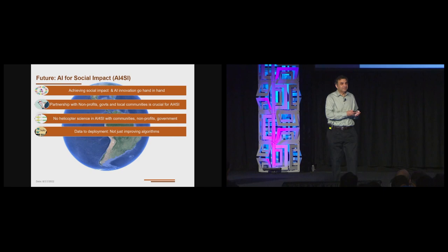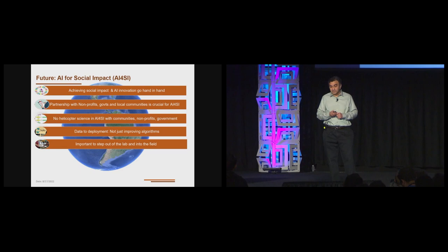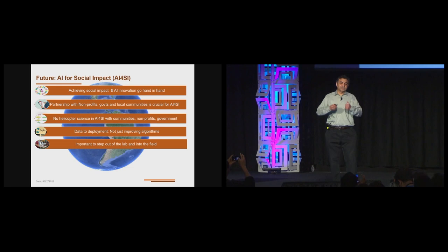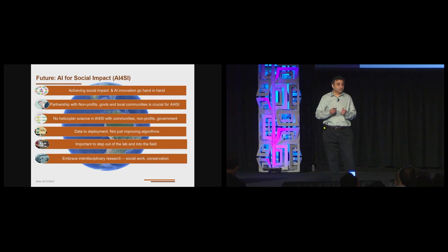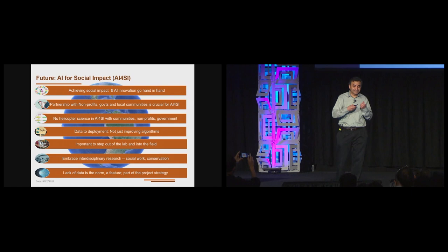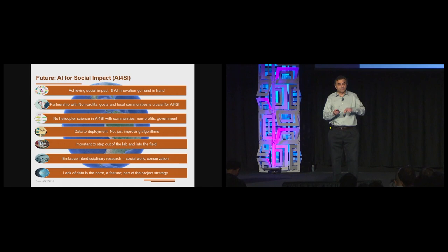The whole data to deployment pipeline is important. It's not just about improving algorithms. And so for scientists who are involved in AI for social impact, innovation in all parts of the pipeline are important. It's important to step out of the lab and into the field. I can tell you many examples where, sitting in our lab, we may tell rangers, why don't you walk in straight lines? When you go there in reality and patrol with them, you say it's a very hilly terrain. They can't walk in a straight line. It's important to embrace interdisciplinary work, whether with social work or with conservation scientists. And finally, lack of data or limited data is a norm, a feature, and should be part of a project strategy.